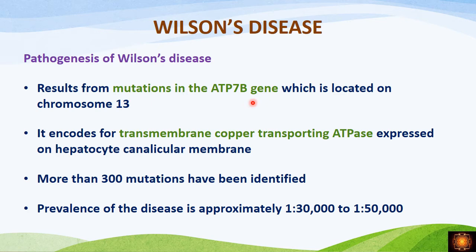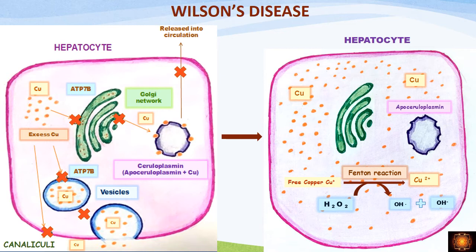In Wilson's disease, there are mutations in the ATP7B gene, which is located on chromosome 13. This gene encodes for transmembrane copper-transporting ATPases — a copper-transporting protein expressed on the hepatocyte canalicular membrane and on the Golgi apparatus. More than 300 mutations have been identified in this gene, and the prevalence of this disease is approximately 1 in 30,000 to 1 in 50,000 patients.